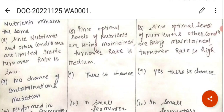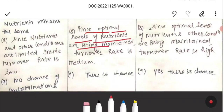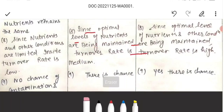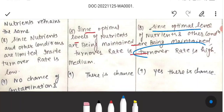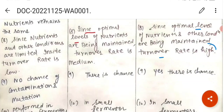In batch culture, since the nutrients and other conditions are limited inside, the turnover rate is low. In fed-batch, since the optimal levels of nutrients are being maintained, the turnover rate is medium. In continuous culture, the turnover rate is high, so the yield remains high.